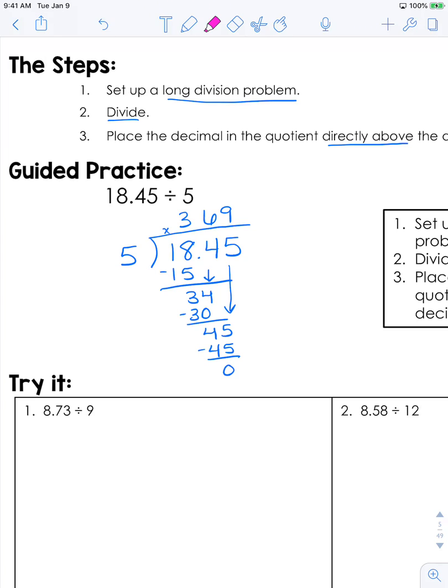So we have our answer, but we have to move that decimal up. Place it directly above. Take this decimal and move it straight up. It's really important that the answers in your quotient go where they need to go in terms of place value. This answer is 3.69.